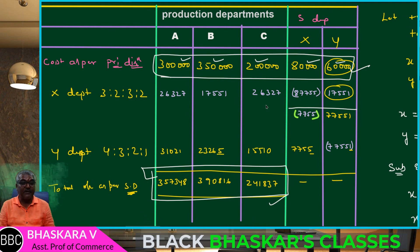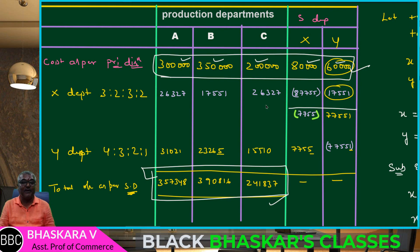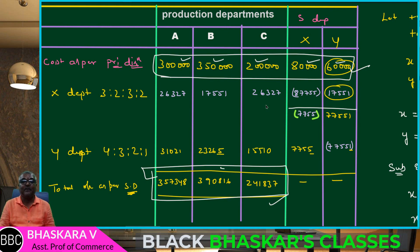Verification: 3,57,348 plus 3,90,816 plus 2,41,837 equals 9,90,000 — which matches the total of 90,000 plus 1,000 figures, confirming our secondary distribution is accurate.